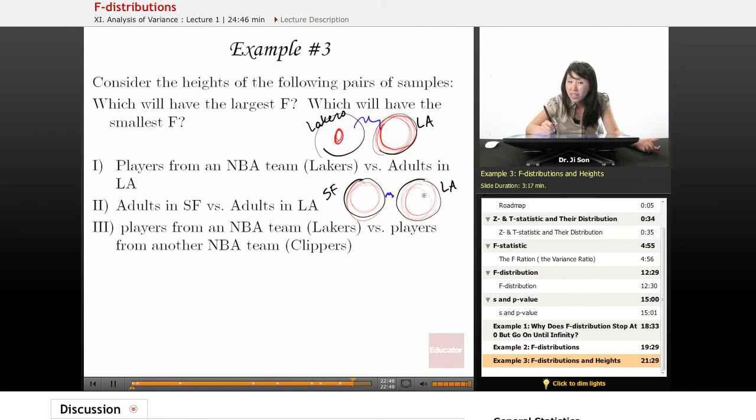So this difference between the groups will probably be very small, but the within group variability will be very large. So I would guess this would have actually a pretty small F.